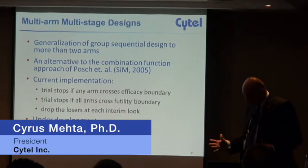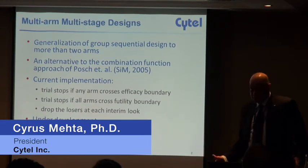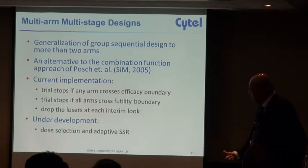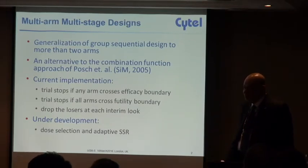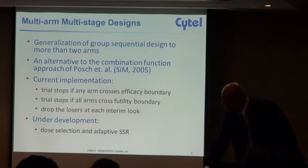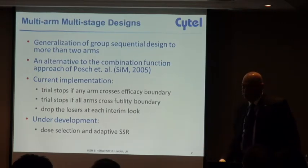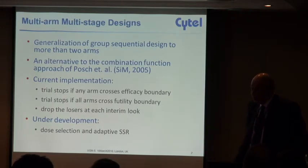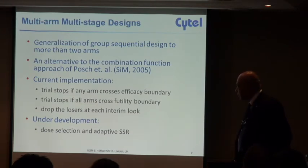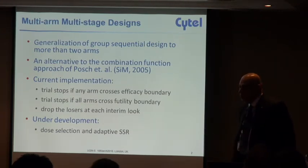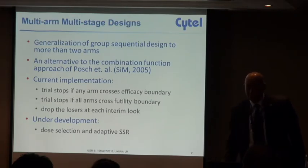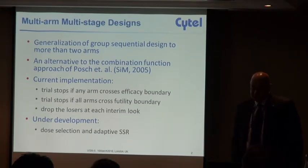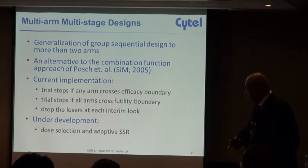We have stopping boundaries for efficacy and futility. The trial will stop the first time any of the multiple arms crosses an efficacy boundary, or if all arms cross a futility boundary. In addition, as you go along look by look, you can drop the losers — any individual arm that crosses a futility boundary can be discarded and the remaining arms can keep going.